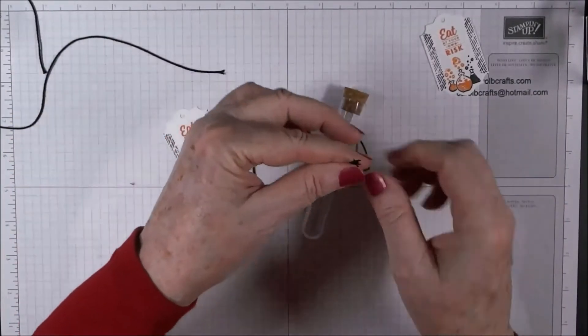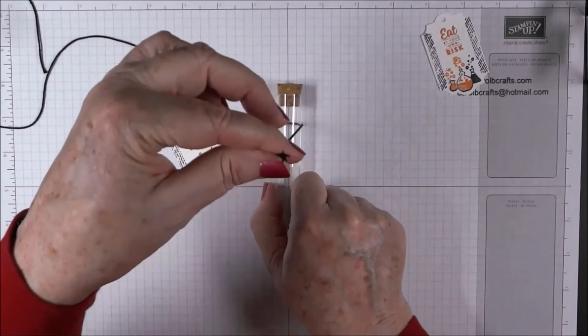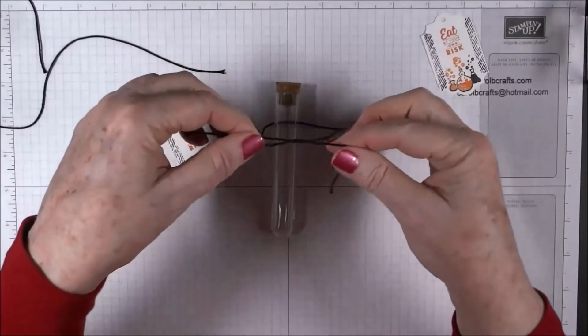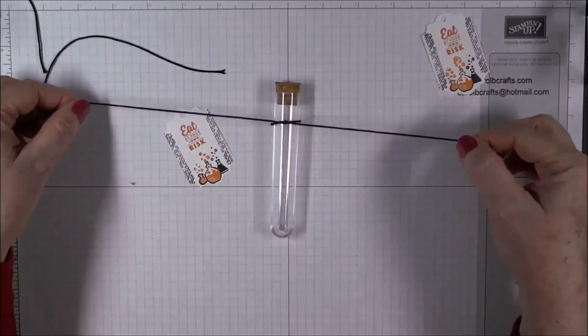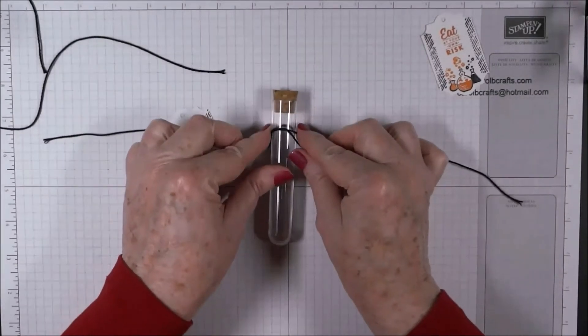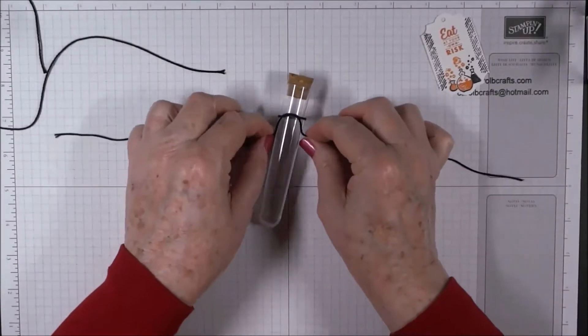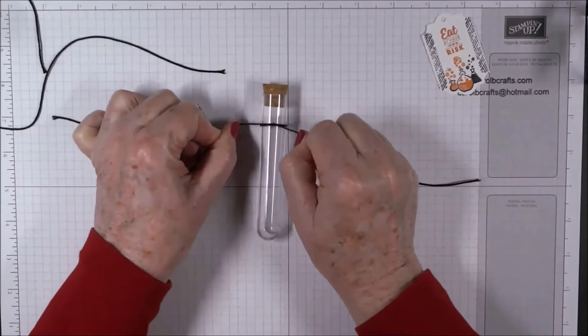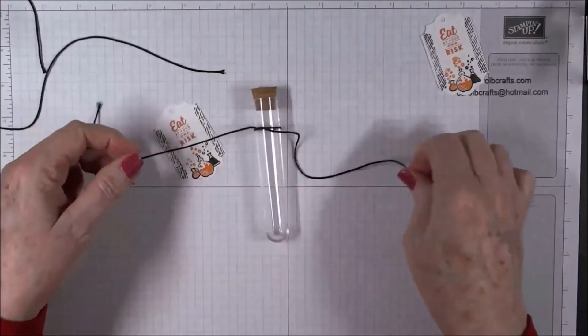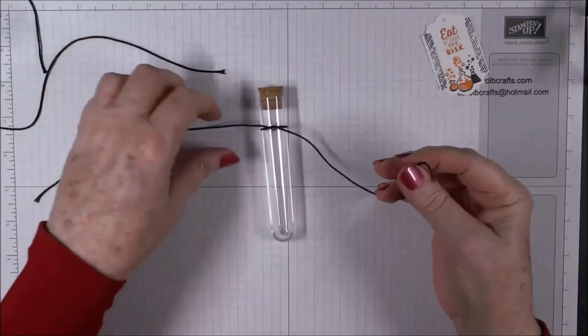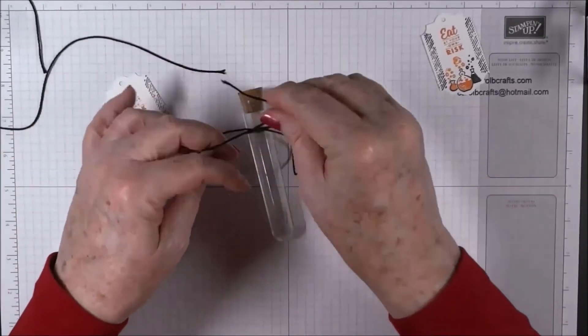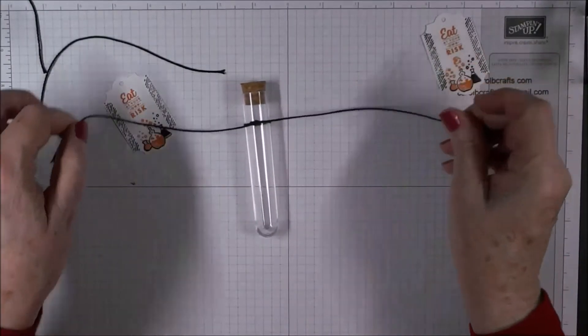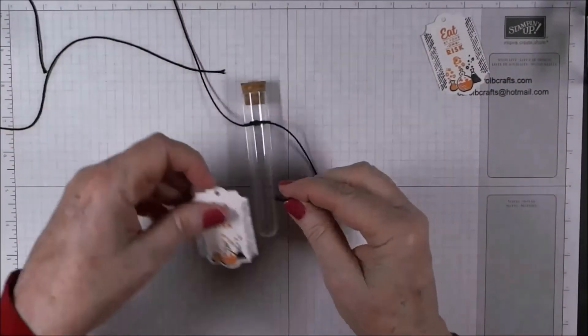So we're going to get these even, have our glue dot pointing up, and then we're going to just tie like we're going to start tying a shoe. And we're going to have it so that that ends up over the glue dot right there and that's going to hold it in place so that it doesn't slide. And then just tie it tight so that it doesn't slide. And then we're going to tie it again like this.